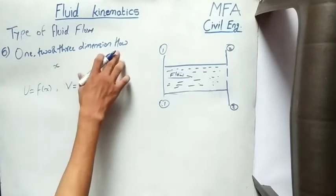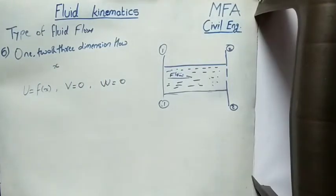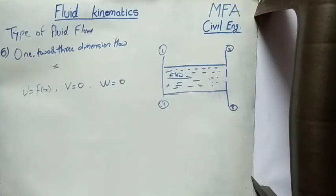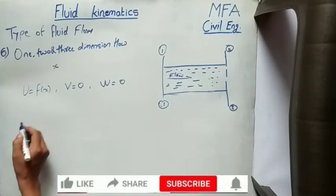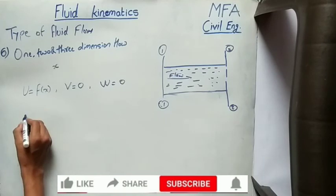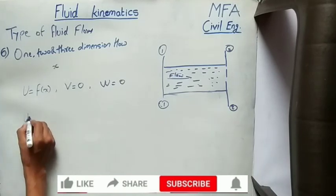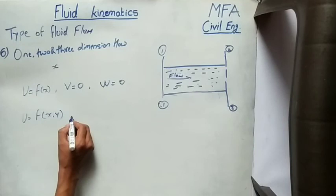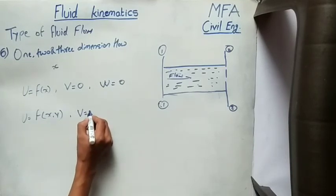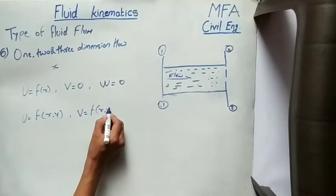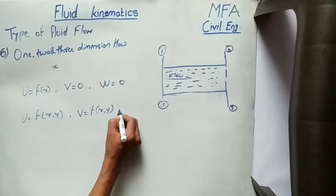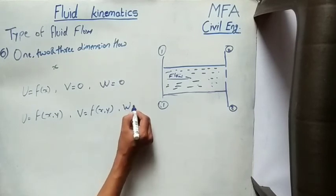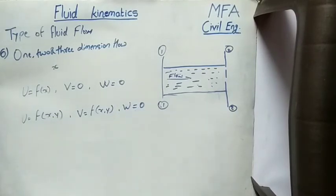In the case of two-dimensional flow, the velocity is a function of time and two space coordinates, and the velocity in the third direction is considered negligible. Mathematically, u equals a function of x and y, and similarly the other velocity component is also a function of x and y, while the velocity in the third direction is zero.